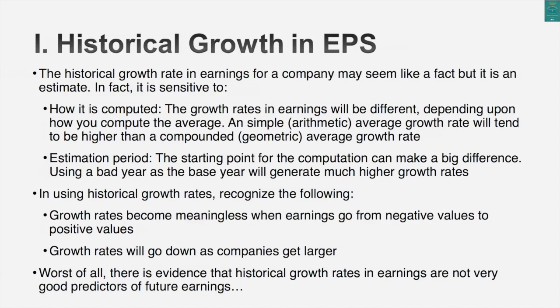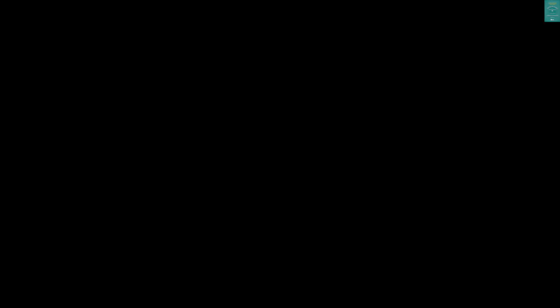Growth rates over the last three years can be very different than over the last five or the last ten. In particular, if you pick a particularly bad year as your base year — so five years ago was a really terrible year — you're going to get a much higher growth rate. And third, the growth can be very different depending on whether it's an arithmetic average or a geometric average. Geometric averages allow for compounding — they're much more realistic estimates of growth — but either can be used. That's why you can look for the same company on different data services and end up with very different numbers as the historical growth rate.